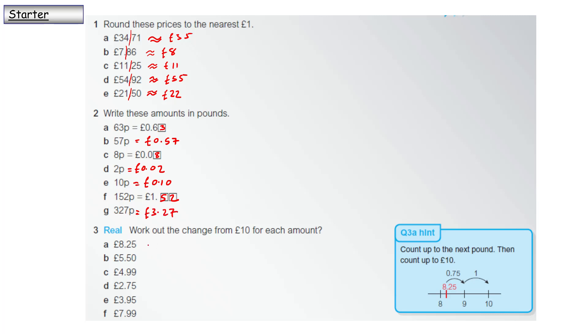Question three: work out the change from £10 for each amount. Now this is a nice little way of doing it - you work out how many pence it takes to the next pound, then count to your pounds. £8.25 to get to £9 needs 75p, and from £9 to £10 is £1, so £1.75.